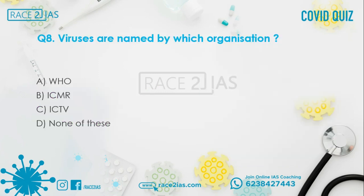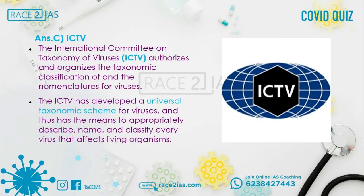Question number 8: Viruses are named by which organization? Option A: WHO. Option B: ICMR. Option C: ICTV. Option D: None of these. The answer is Option C, ICTV. The International Committee on Taxonomy of Viruses authorizes and organizes the taxonomy, classification, and nomenclature of viruses. The ICTV has developed a universal taxonomy scheme for viruses and has the means to appropriately describe, name, and classify every virus that affects living organisms.